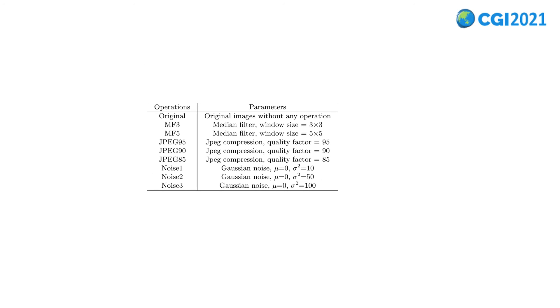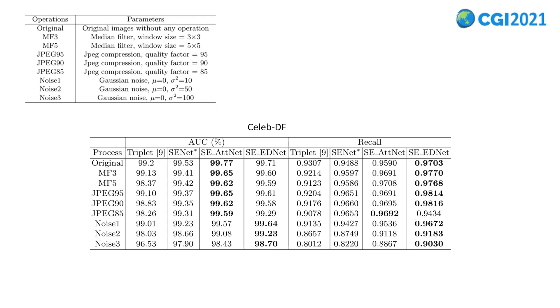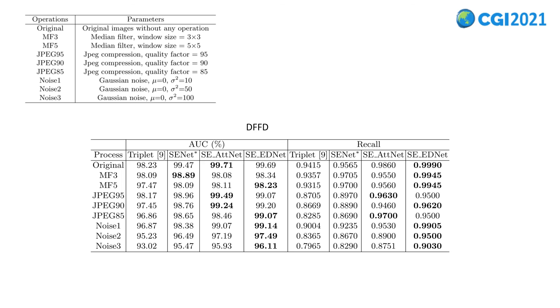To prove SE-EDNet shows stronger robustness, some common image processing operations are used to post-process the test set, such as JPEG compression, median filters, and Gaussian noise. The details are listed in this table. These two tables show the detection results. It is clear that SE-EDNet shows stronger robustness.